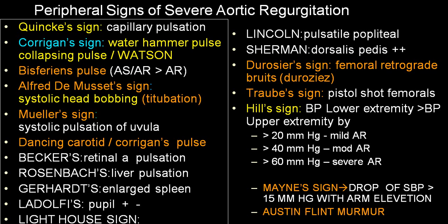Alfred De Musset sign occurs because of increased blood flow into the cranial cavity, producing systolic head bobbing — also called titubation. There is a sudden increase and sudden drop in blood flow, giving rise to a nodding of the head, labelled as Alfred De Musset sign. Muller sign: if you open the oral cavity and look at the uvula during systole, you get a pulsation in the uvula — that is Muller sign.